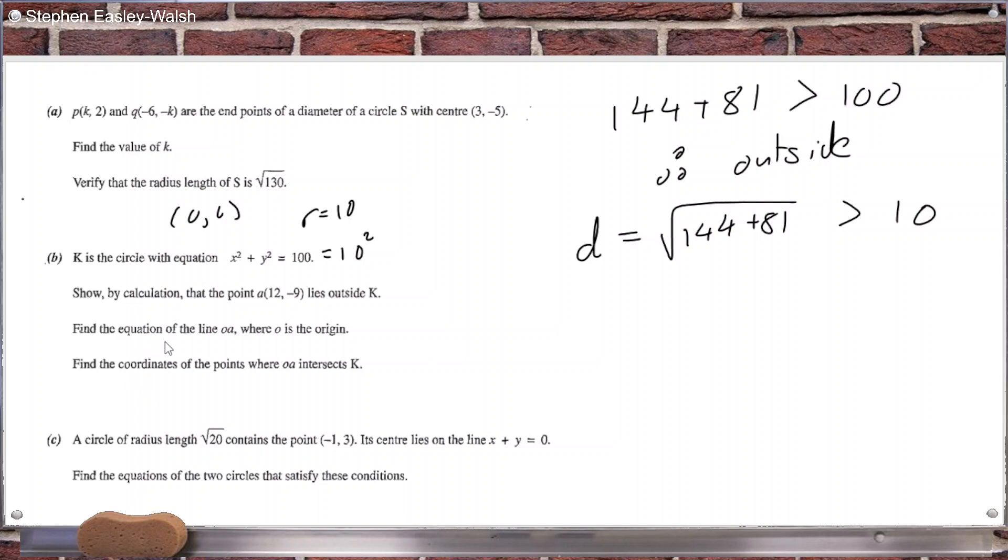Find the equation of the line OA where O is the origin. Okay, that's pretty straightforward. That's just Y equals MX. So 12 minus 9 is out here. So you come out 12 and you go down 9. So that would be minus 9 over 12, which is minus 3 over 4X. And the C is 0 because it passed through the origin.